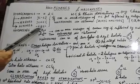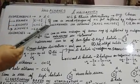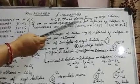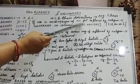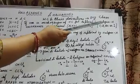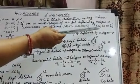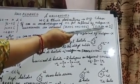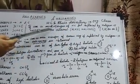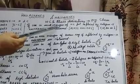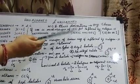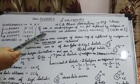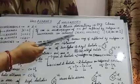Now I am coming to Haloalkanes. If one or more than one Hydrogen of a Hydrocarbon gets replaced by a Halogen — Fluorine, Chlorine, Bromine, or Iodine, which are salt-bearing elements — then Haloalkanes are formed.